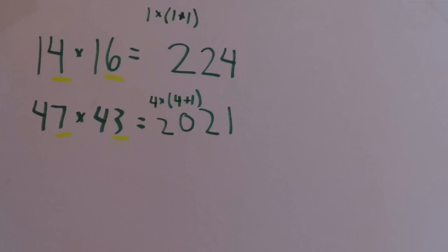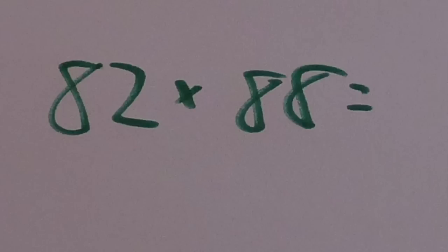This trick can be applied to squaring two digit numbers that end in 5, since 5 plus 5 equals 10. So here we have 65 times 65. You do the ones digits together first, so 5 times 5 gives you 25. Write that down. Then you do 6 times 7, which gives you 42. Here's another one for you to practice on. I'll put the answer in the description.